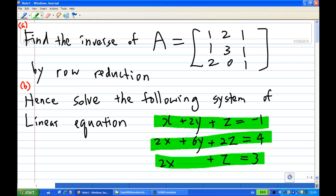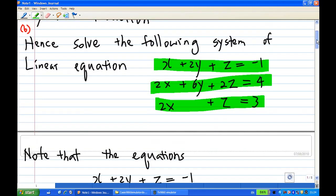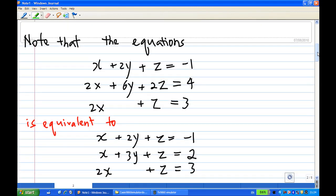Notice that the system equation given is equivalent to x + 2y + z = -1. Then, if you multiply the second equation by half, then the second equation 2x + 6y + 2z = 4 is the same as x + 3y + z = 2, and the first and third equations remain the same.